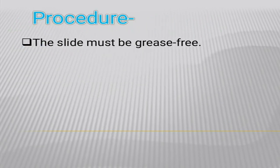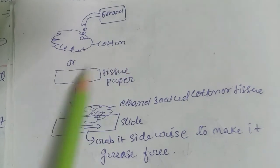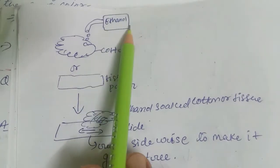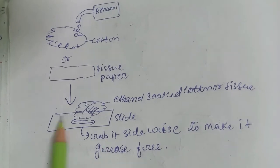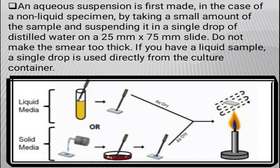Now let's see the procedure for preparation of a smear. First of all, we take a glass slide and make it grease-free — meaning any fog or dust is removed so it will not be contaminated. We take a soft tissue or cotton, add ethanol, and rub it on the slide for at least 5 minutes until it is clean. Then, if we have a solid or non-liquid specimen, we prepare an aqueous suspension by taking a single drop of distilled water and adding a small amount of sample to inoculate.